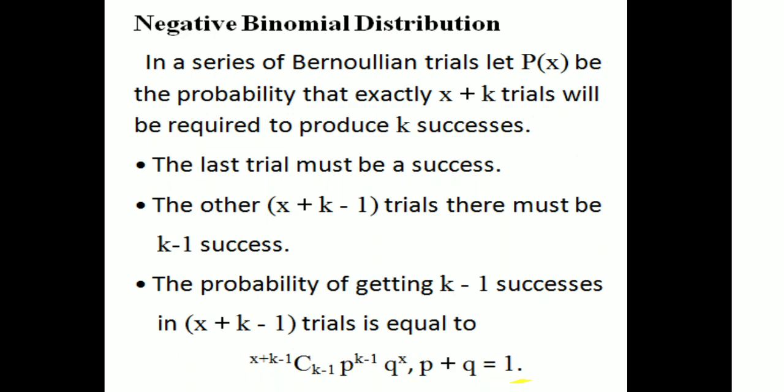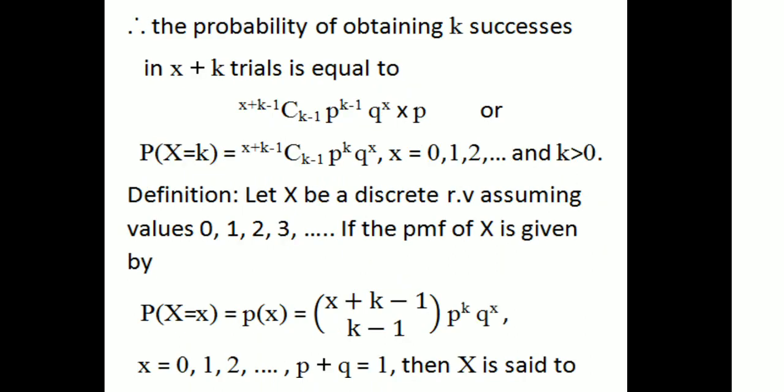Where P plus Q equals 1. Therefore, the probability of obtaining K successes in X plus K trials is equal to C(X+K-1, K-1) × P^K × Q^X × P.